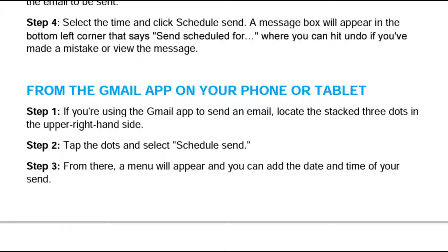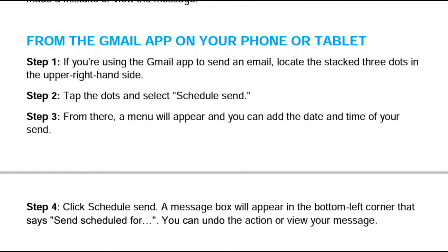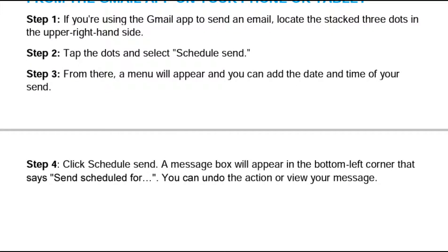On the app, if you are using the Gmail app to send an email, locate the stacked three dots in the upper right-hand corner. Tap the dots and select 'Schedule Send'. From there, a menu will appear and you can add the date and time of your send, then click 'Schedule Send'.